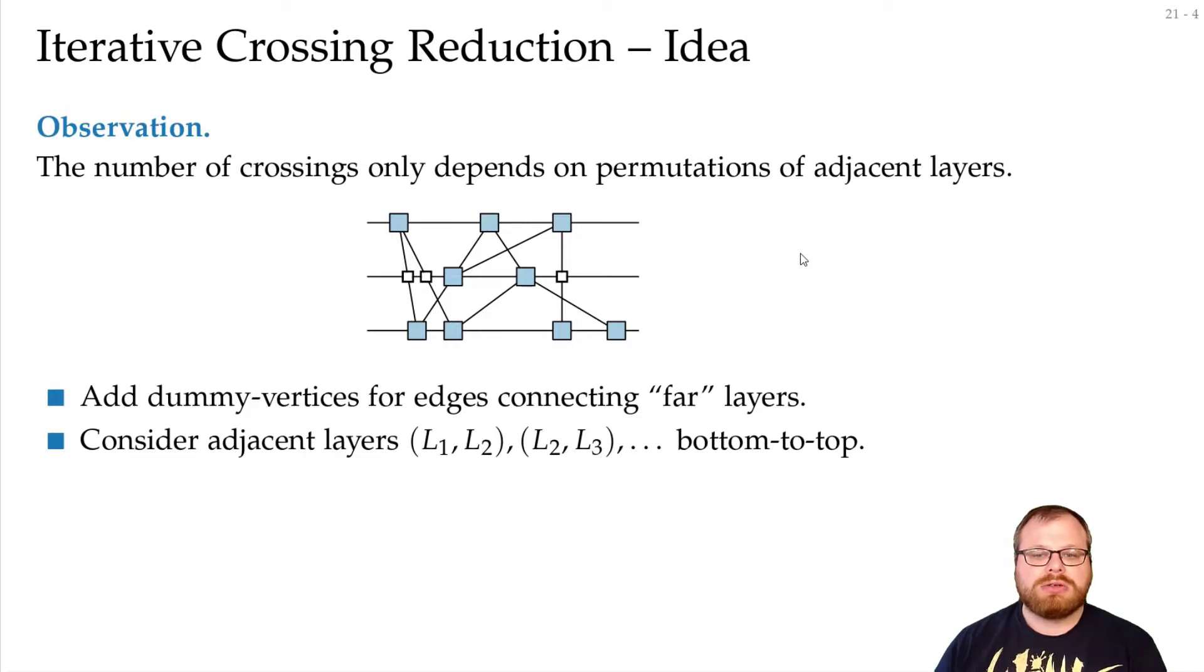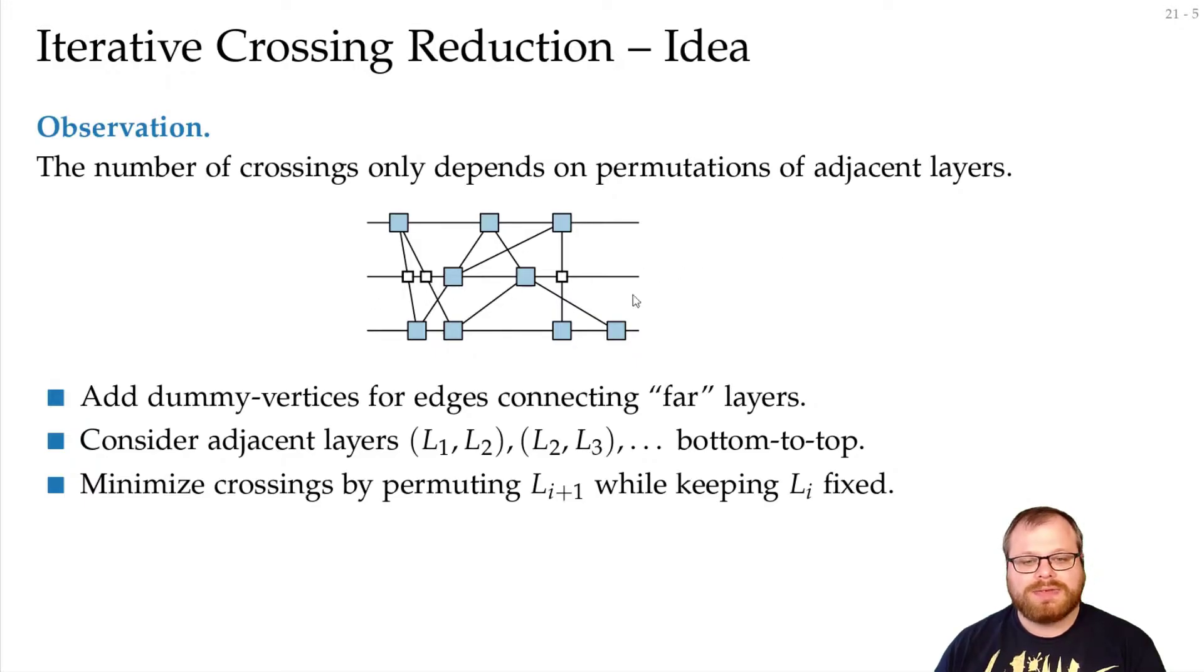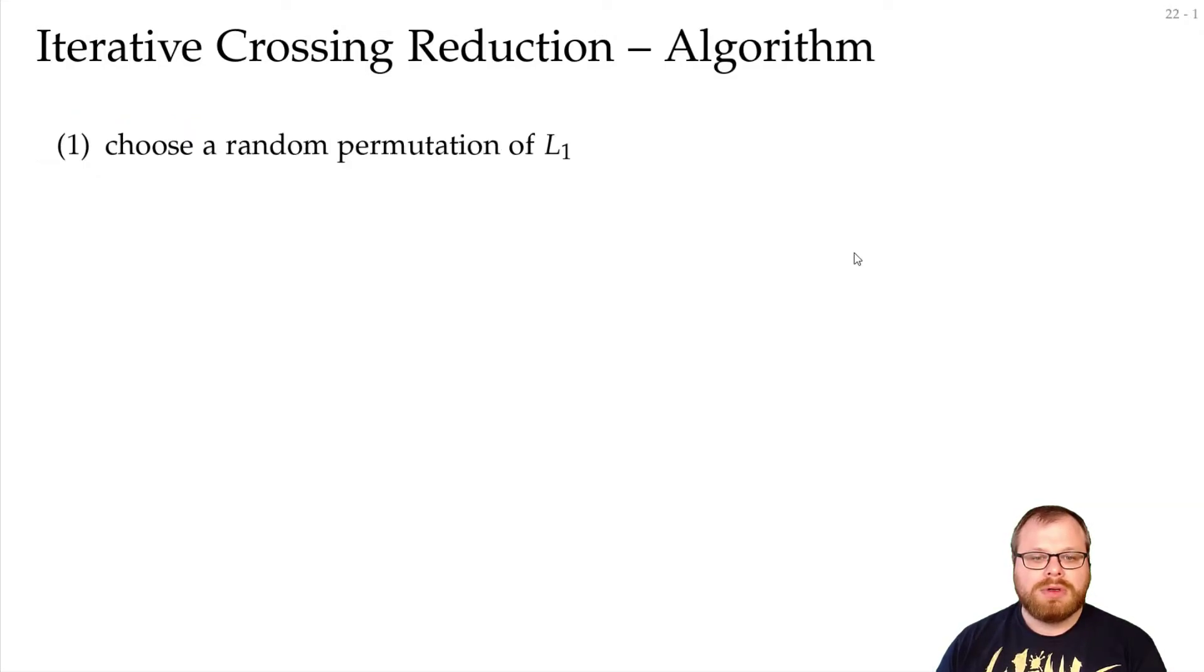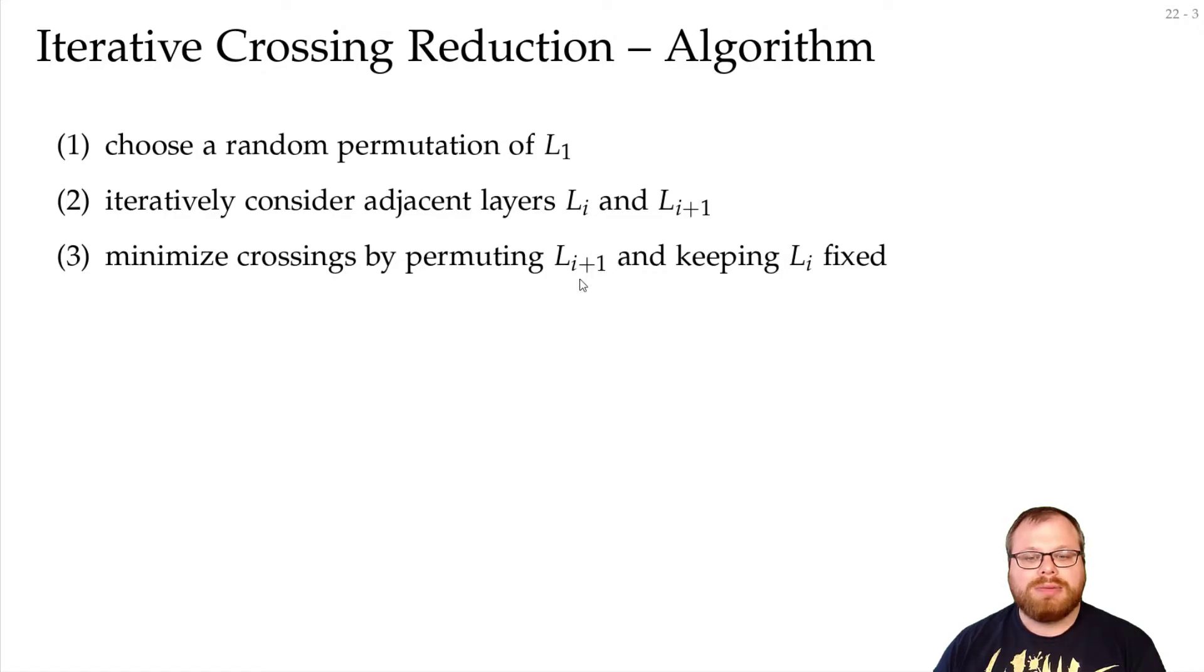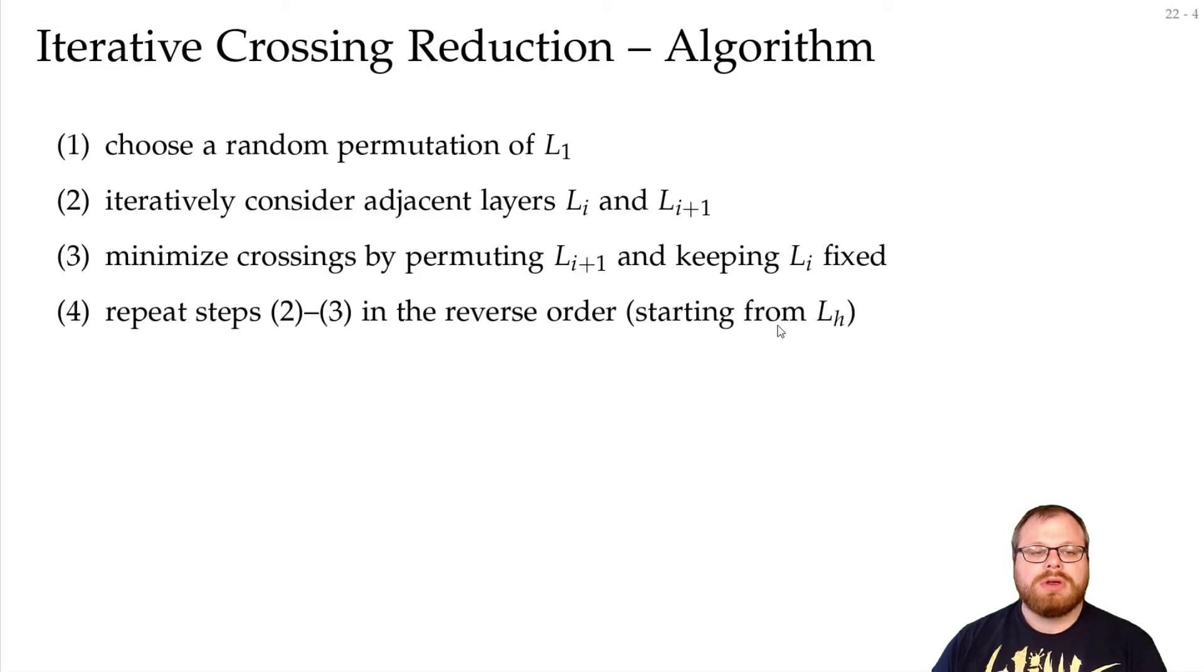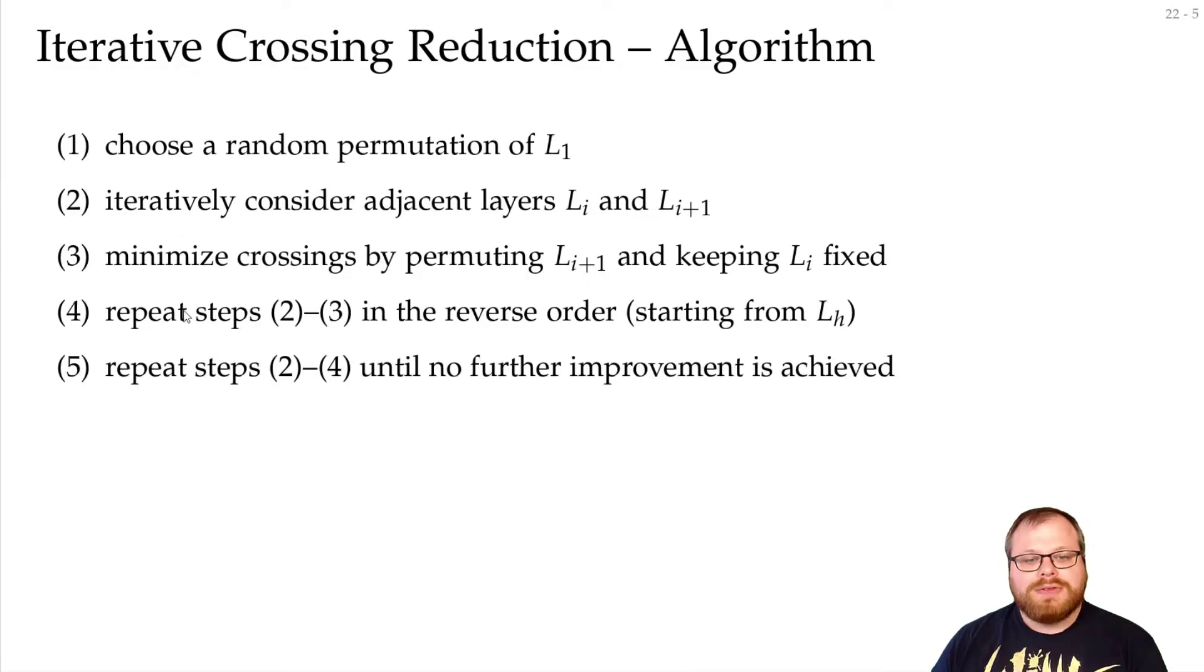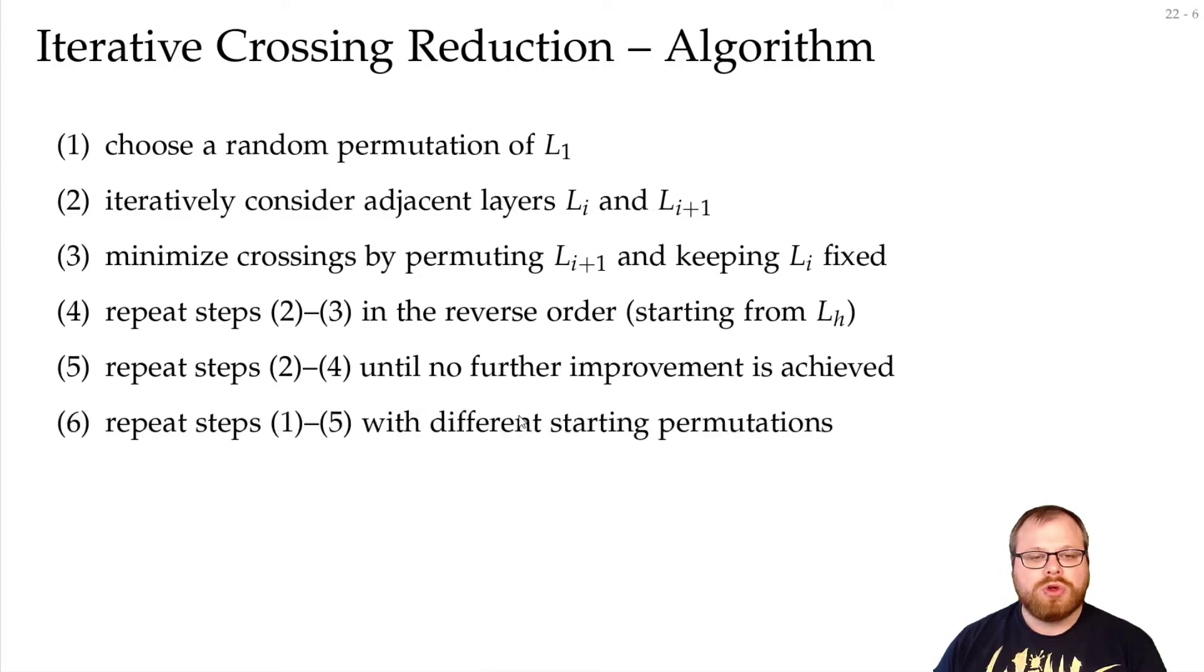We try to reduce the number of crossings by minimizing the crossings of some layer while keeping the previous layer fixed. We fix everything here and only change the order on this layer. Then we iteratively consider adjacent layers and permute layer Li+1 while keeping layer Li fixed. Then we repeat those steps in reverse order from top to bottom, and we do that until we don't get any more improvements. Then we start with a different random permutation.